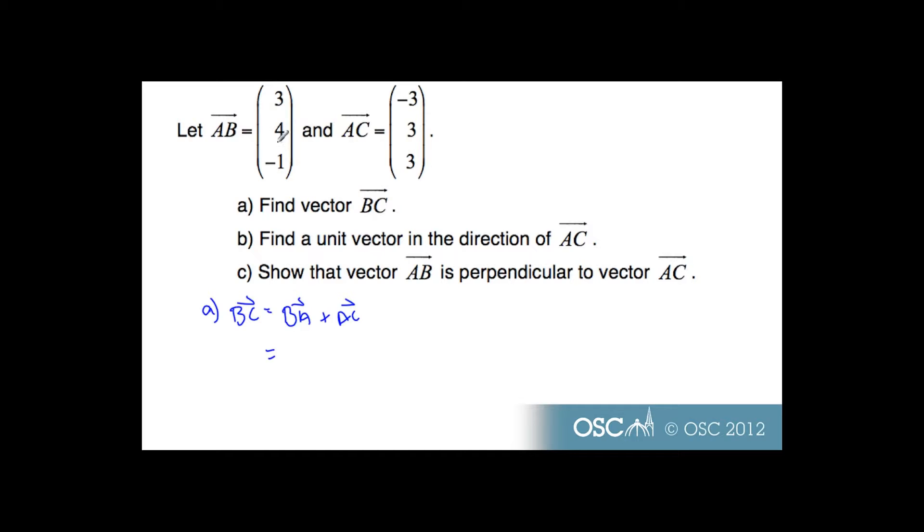AB is (3, 4, -1), so BA will be the opposite signs of those: (-3, -4, 1). Plus my AC will be (-3, 3, 3), and so if I add these together, I get (-6, -1, 4), and this is vector BC.